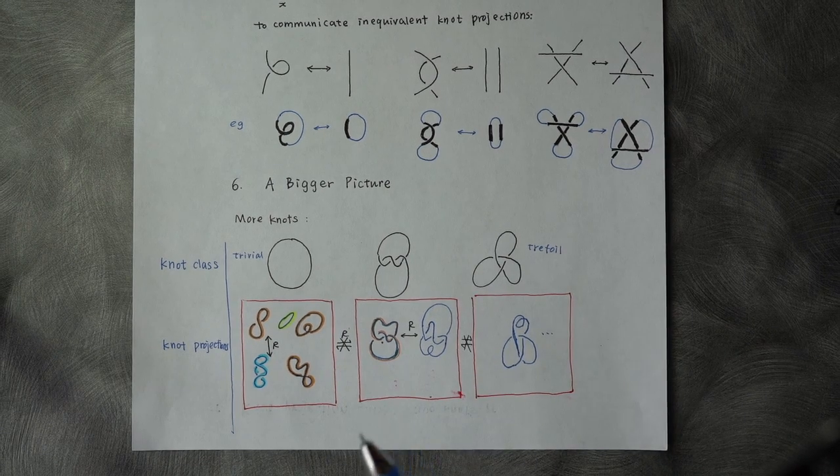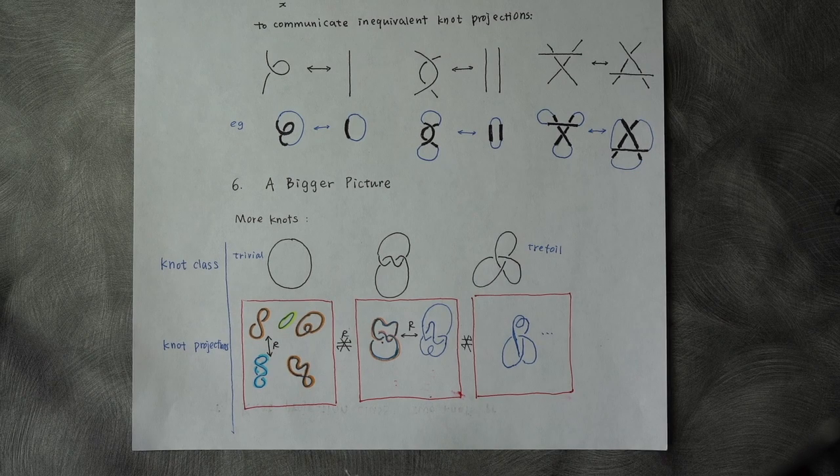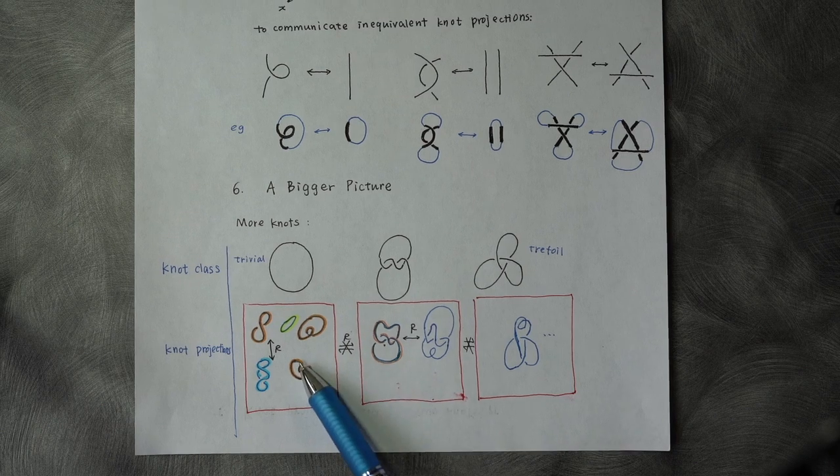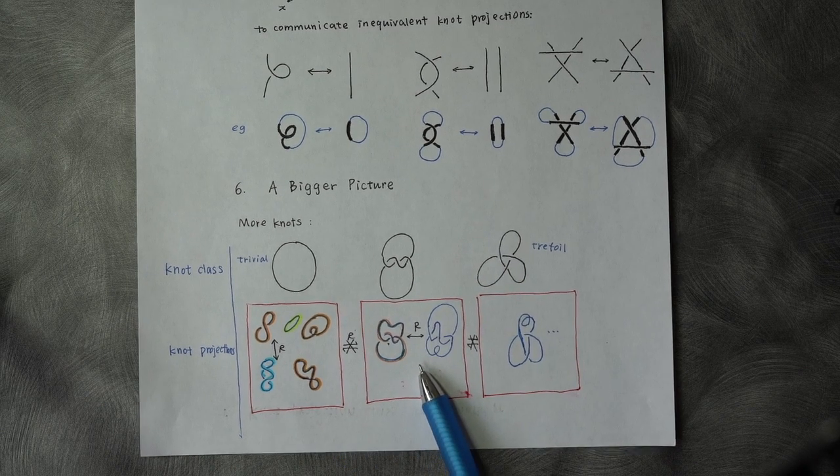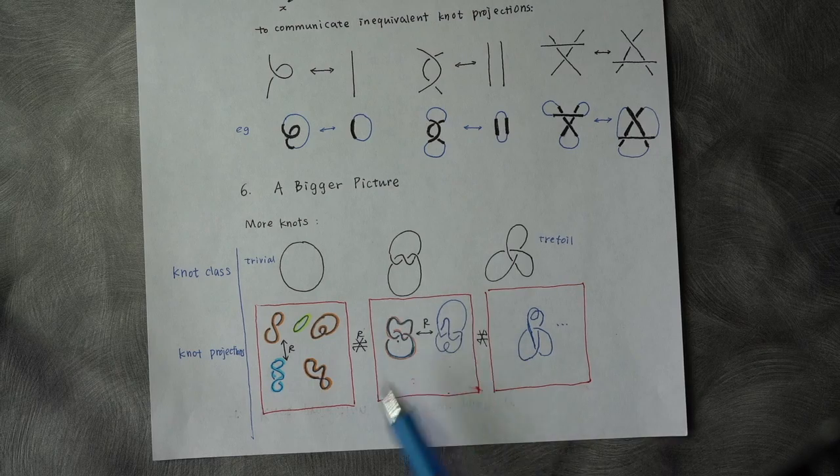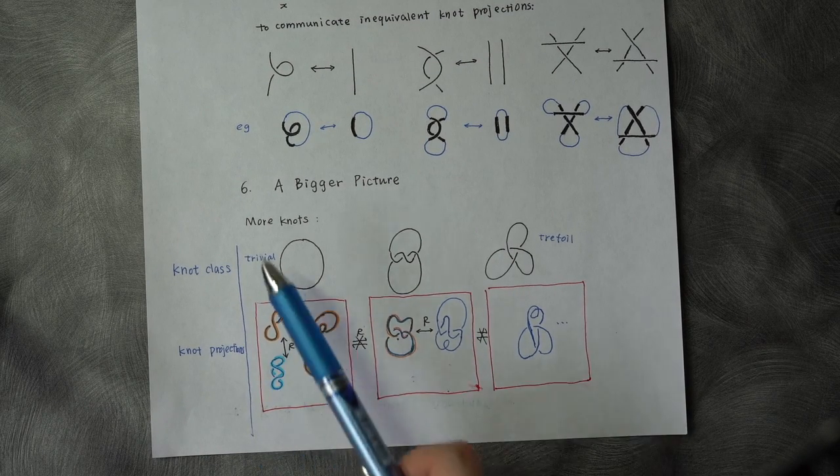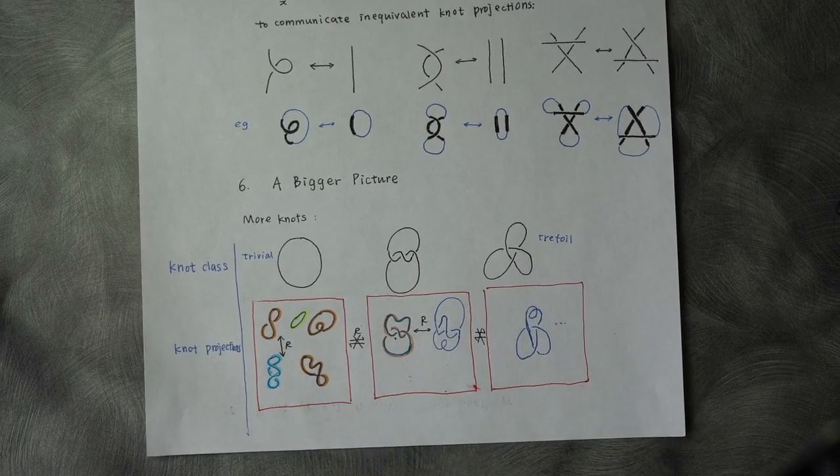there is no Reidemeister move sequence which can help us connect two knot projections coming from different knot classes, like this red border. Projections live inside the red squares and belong to a specific knot class. They don't communicate to each other.